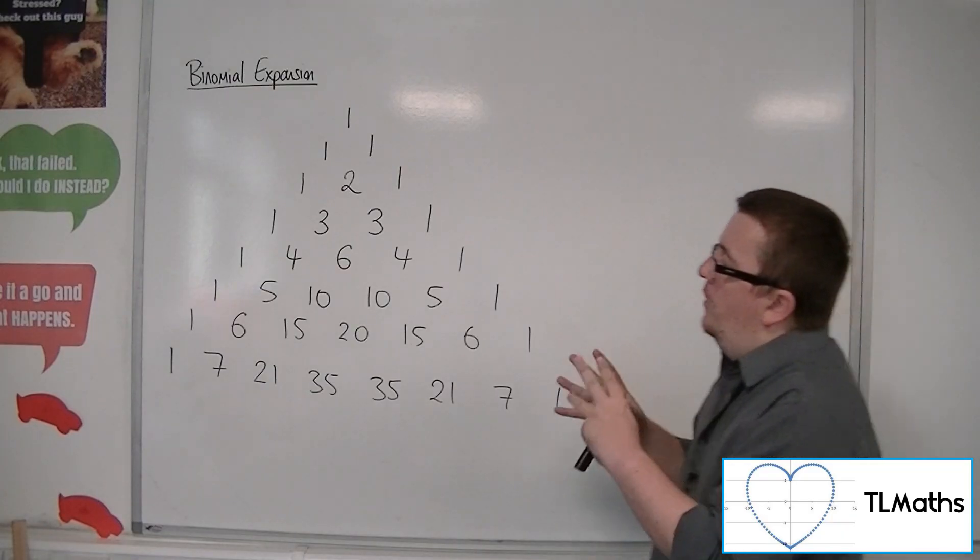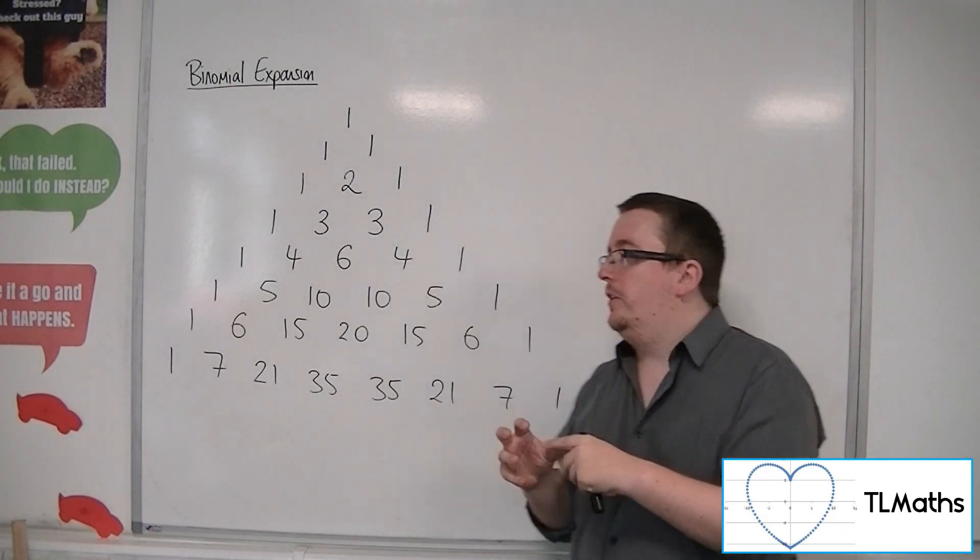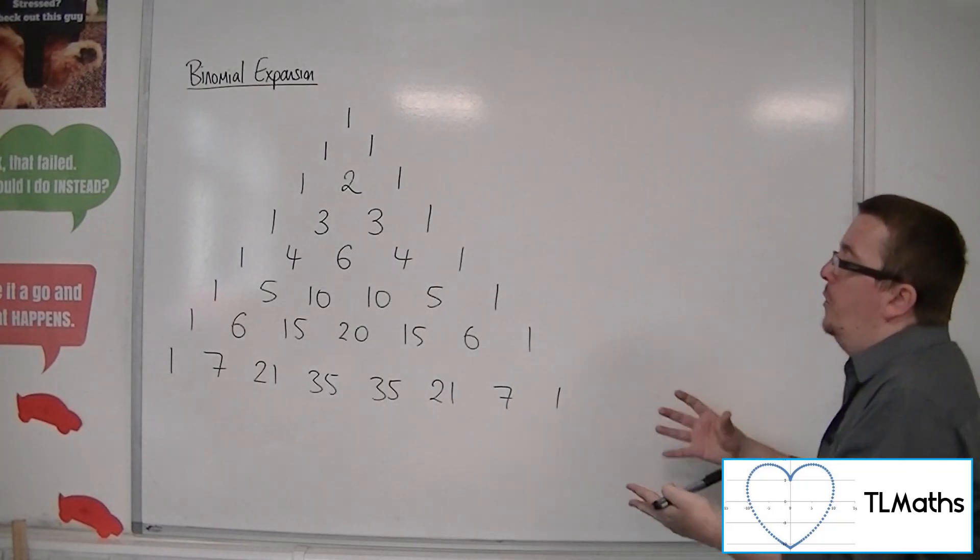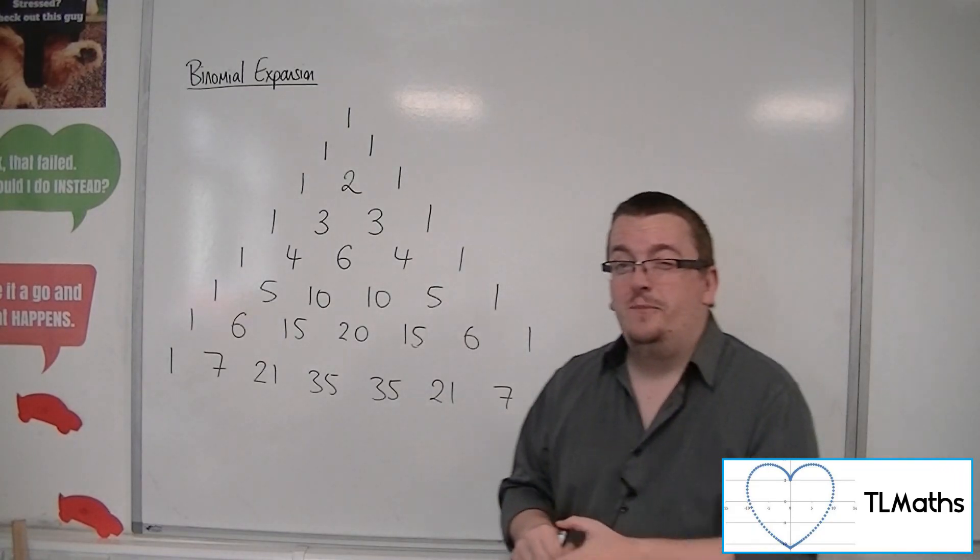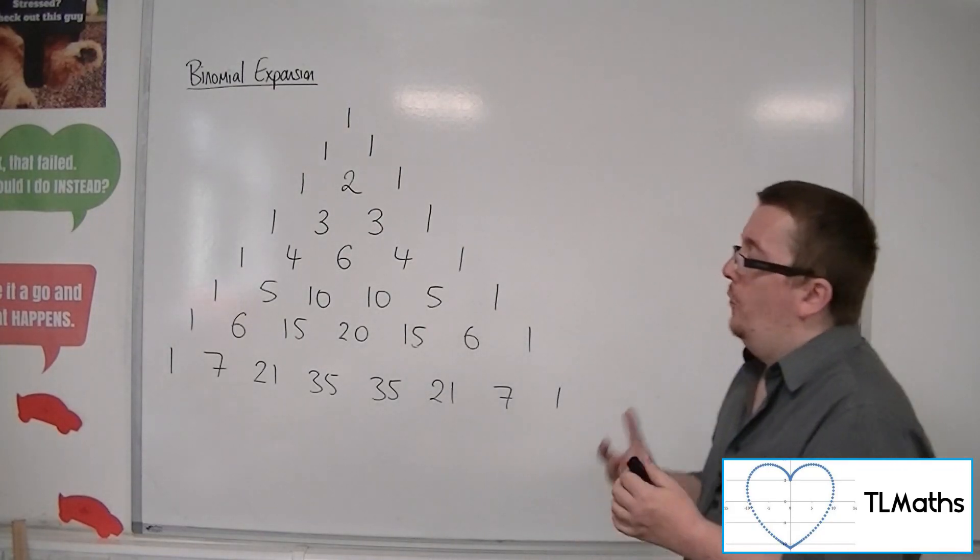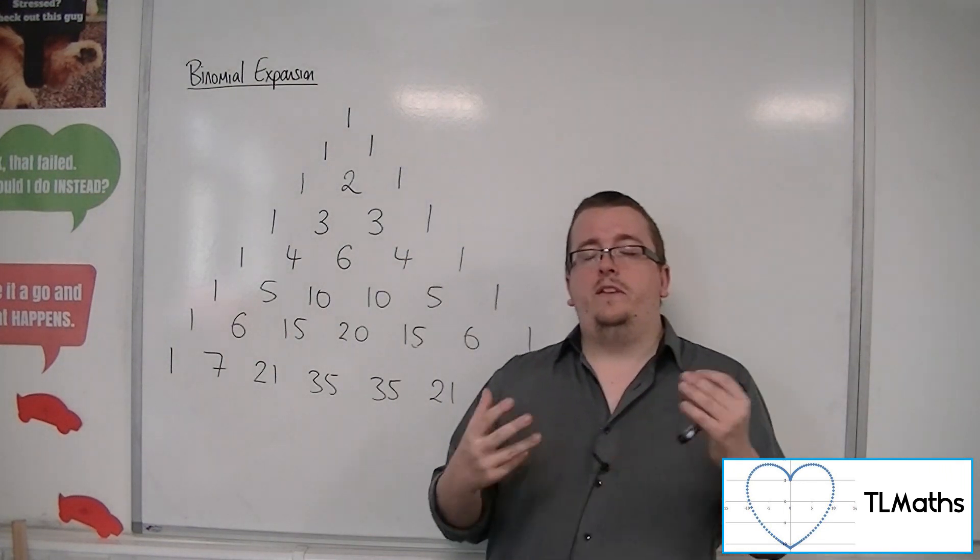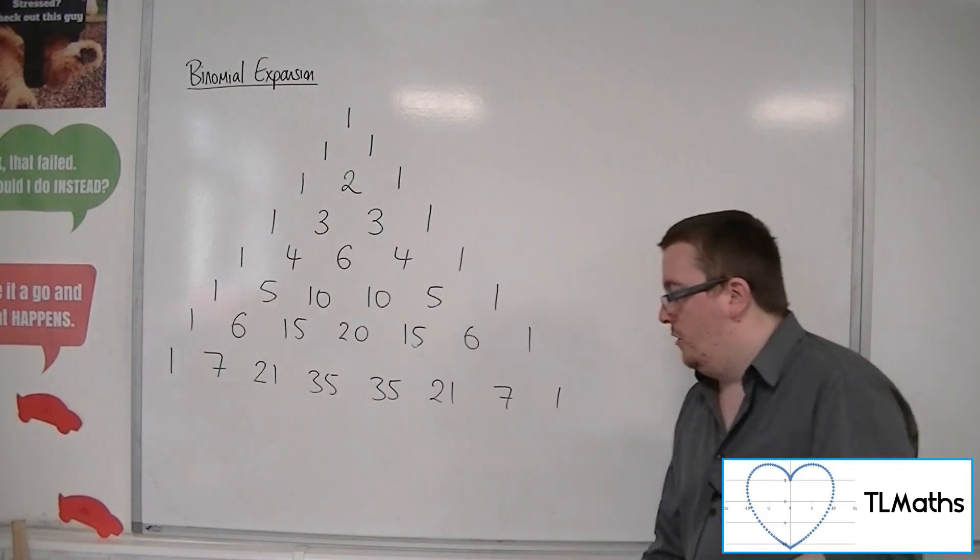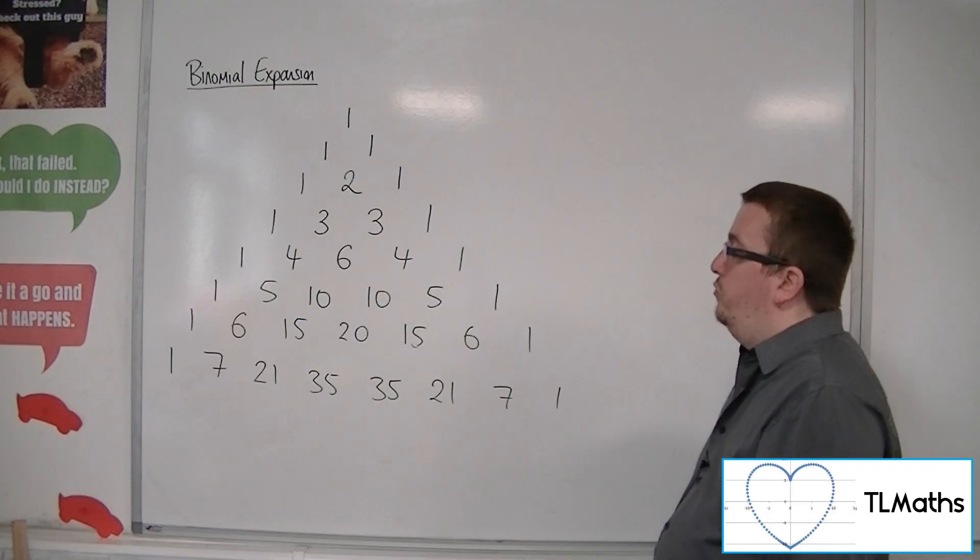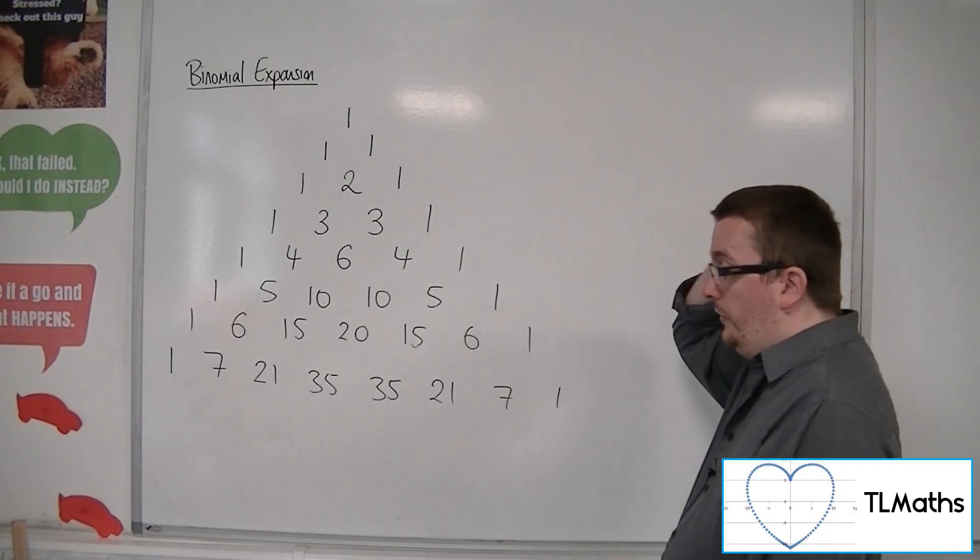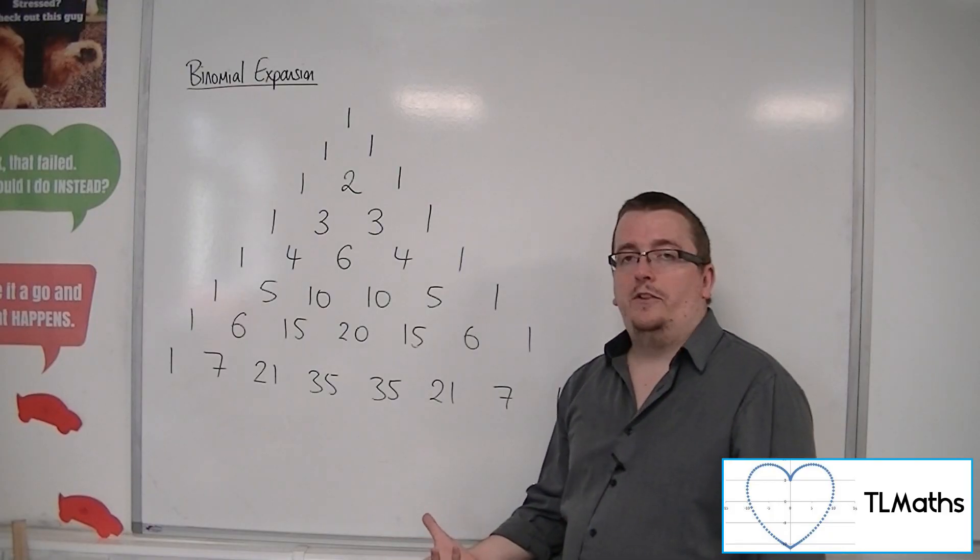We also have a way of calculating these values because these are numbers we'll need when dealing with binomial expansion. Although it can be useful to draw out Pascal's triangle, if we need something on the 20th or 100th row, we're going to have problems.